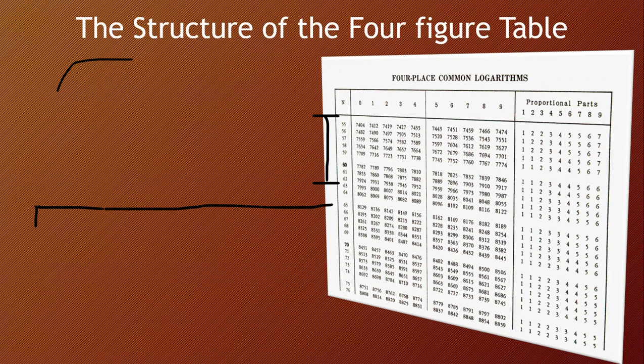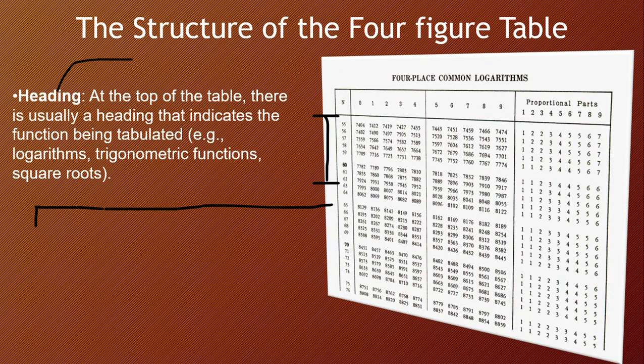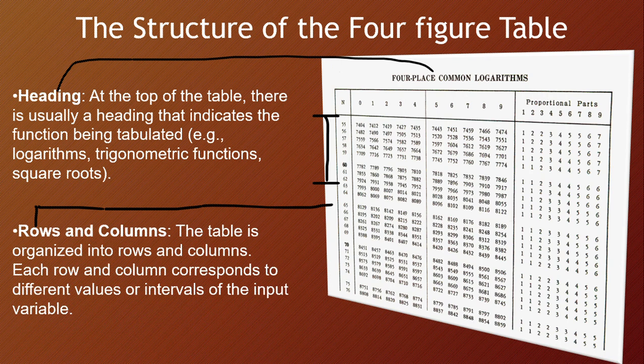We will be looking at the structure of the four-figure table. What does a four-figure table look like? This is an example of the four-figure table. One of the things we need to know about it is that there is usually a heading. So the heading is always at the top of the table, and that is indicating the operation which the table wants to perform. Like this one is a logarithm table - that is why we see logarithm at the heading.